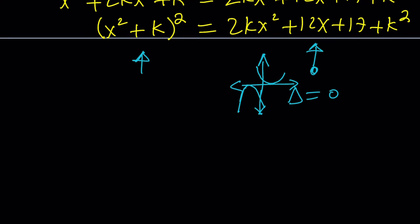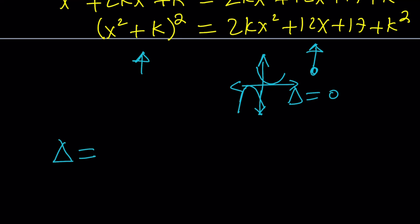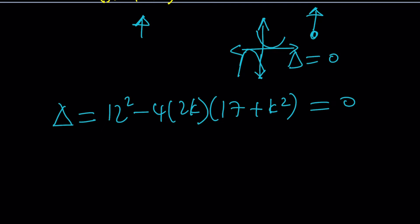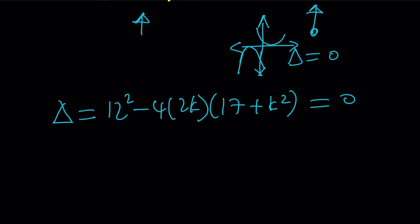Let's go ahead and write it down. Now, delta, which is the discriminant, is b squared minus 4ac. c is 17 plus k squared, which is our constant. And guess what? This gives us a cubic equation. Isn't that awesome? Let's go ahead and expand it. When you go ahead and distribute it, you're going to get 144 minus 8k times 17. To keep a long story short, can I just give you the equation? Take a shortcut here. You're going to get 8k cubed plus 136k minus 144 equals 0.